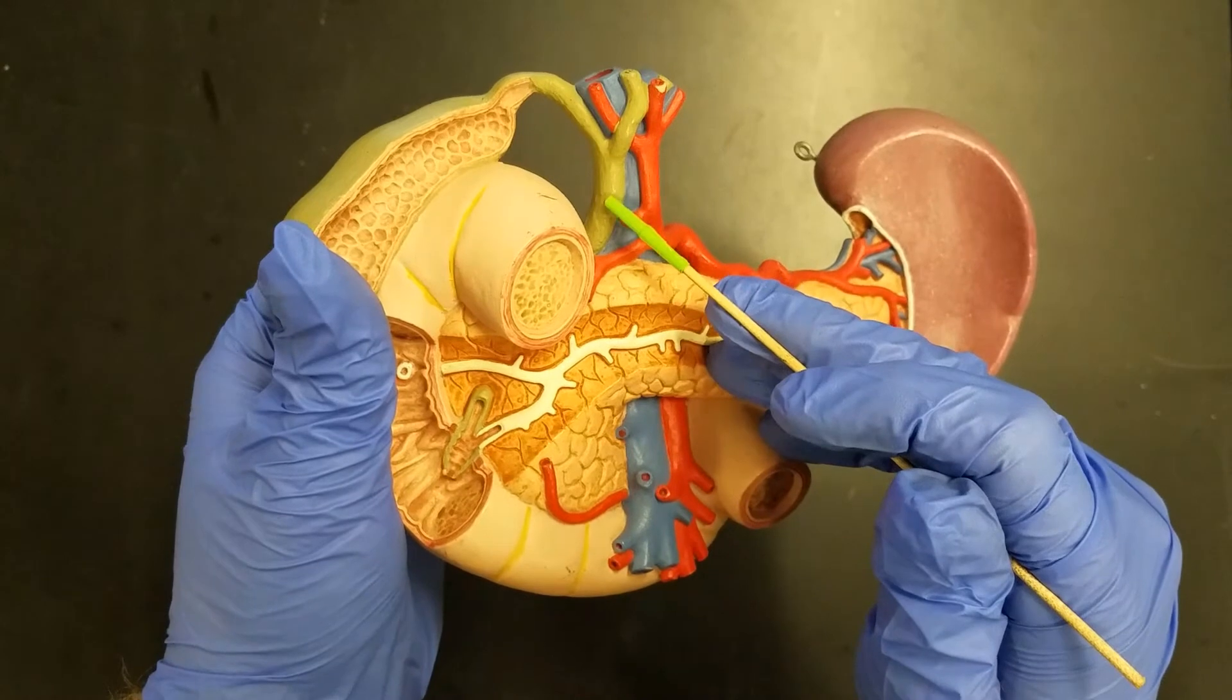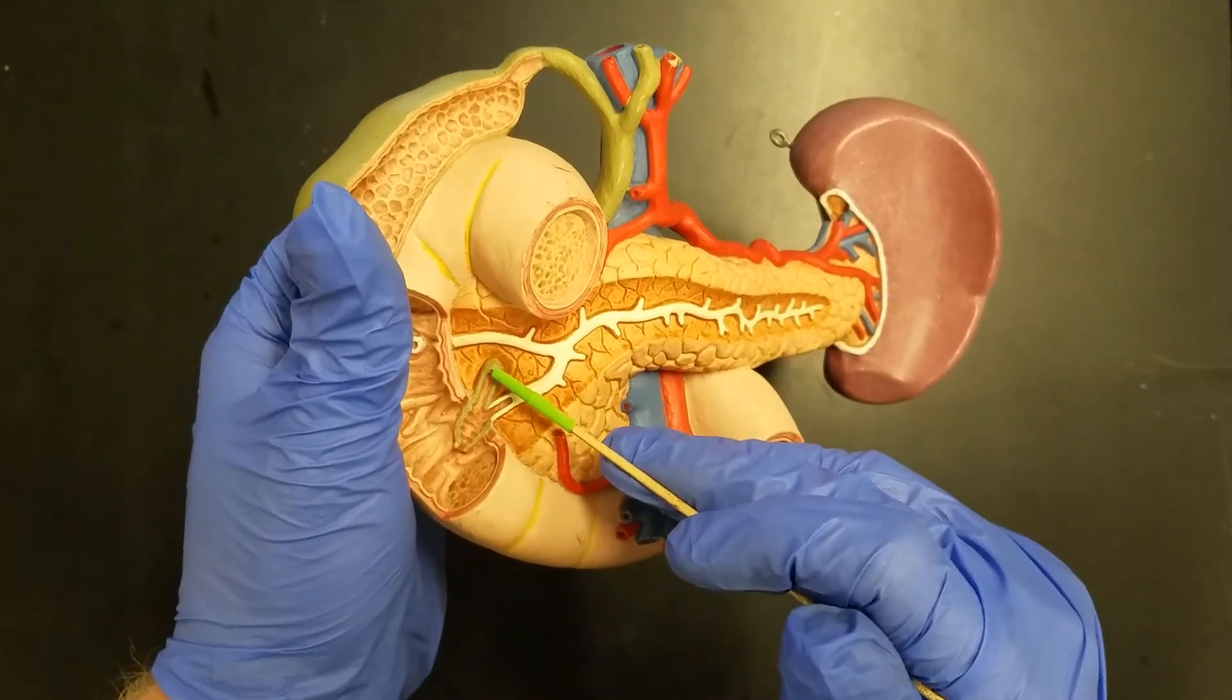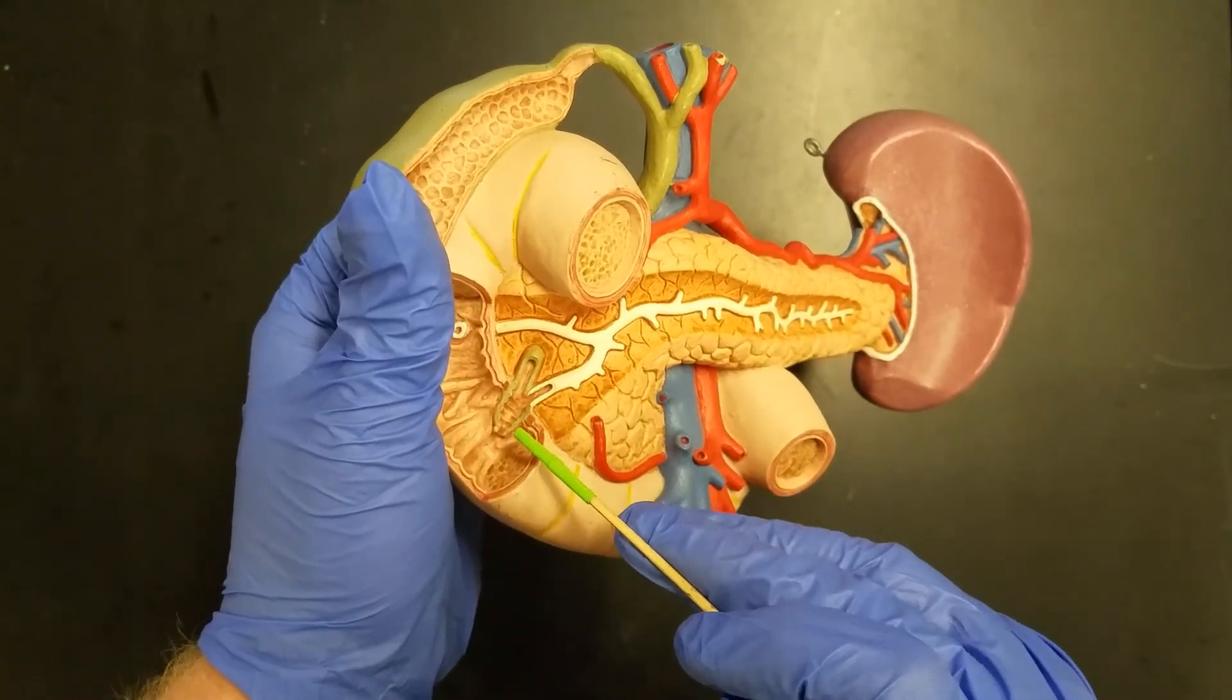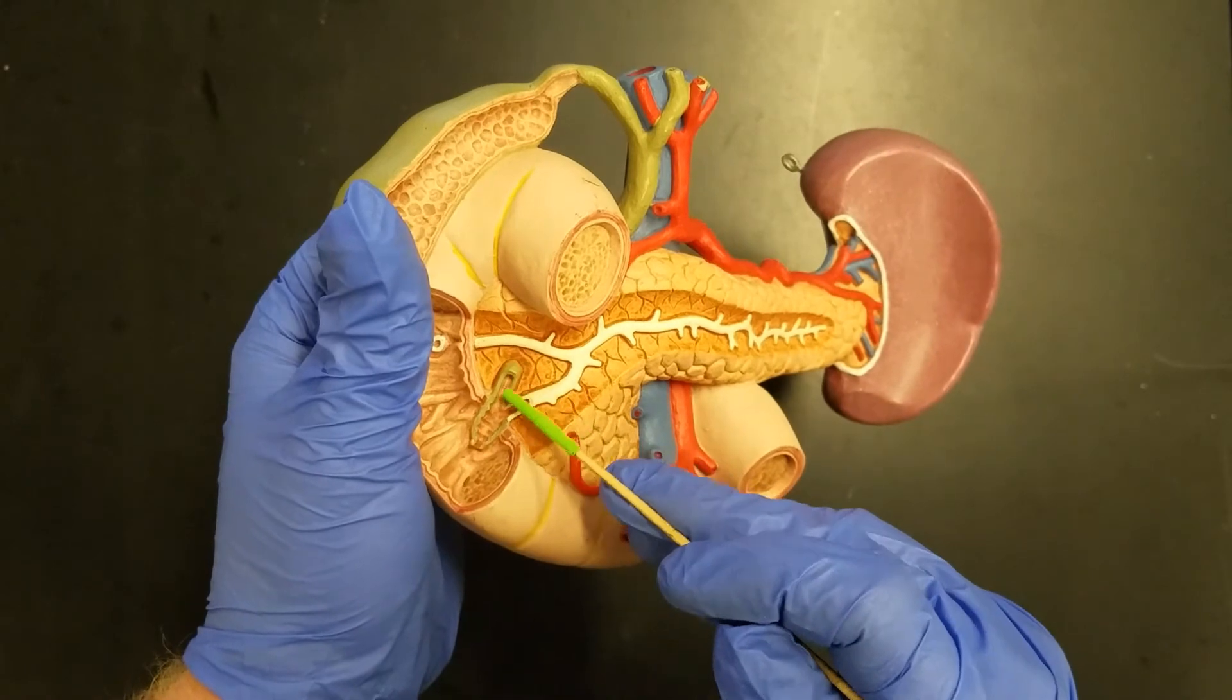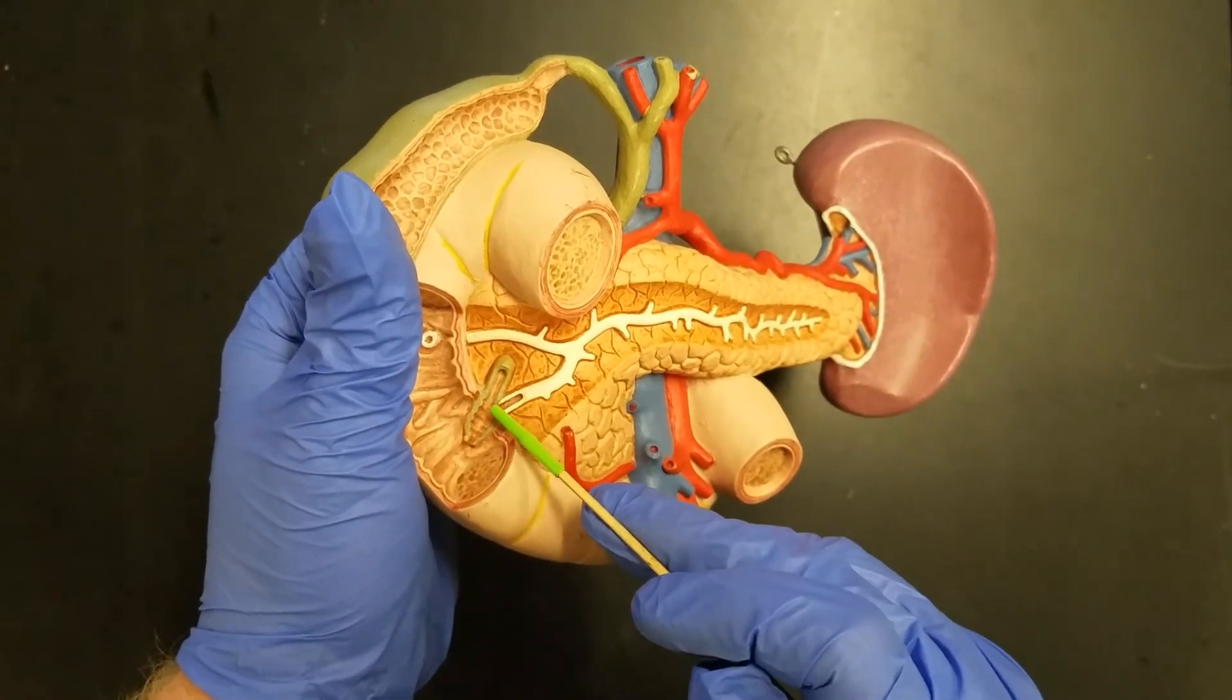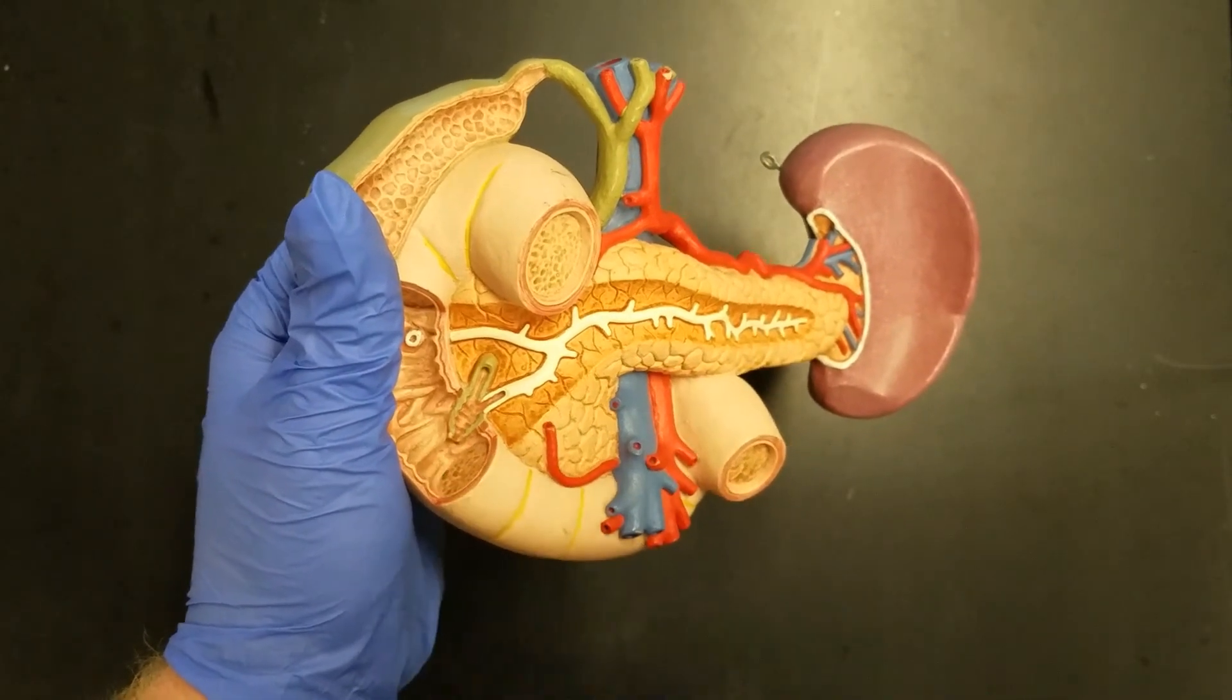And our common bile duct is going to carry bile from the liver and gallbladder all the way down to our hepatopancreatic ampulla. And at the hepatopancreatic ampulla, our common bile duct will merge together with the pancreatic duct and empty both bile and pancreatic juices out into the duodenum.